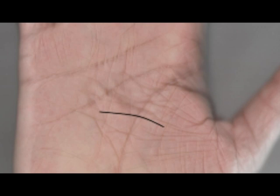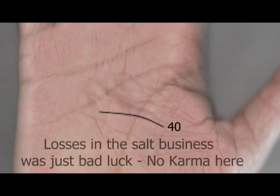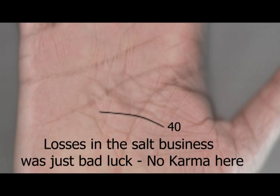Then we turn our attention to the problem that he had at the age of 40. Now that was just plain bad luck. He was transporting salt during a storm and didn't package or protect it properly. There's no real karma attached to this event other than to say that he managed to bounce back quickly into the noodle business at the age of 45.